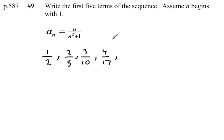And the fifth term is going to be 5 over 5 squared is 25, plus 1 is 26.